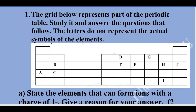The first question: the grid below represents part of the periodic table. Study it and answer the questions that follow. The letters do not represent the actual symbols of the elements. This part of the periodic table represents a number of elements: A, B, C, D, E, F, G, H, I, and J.